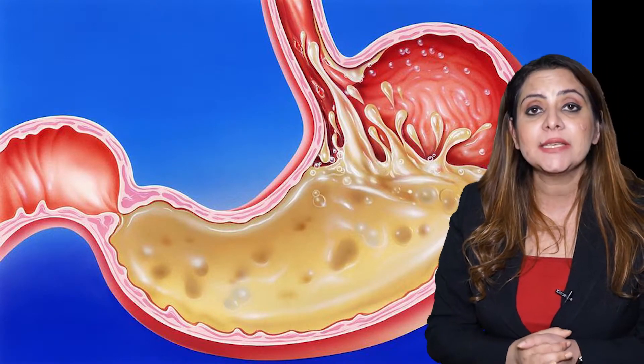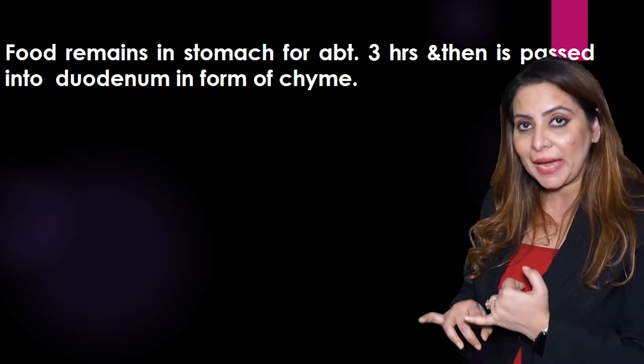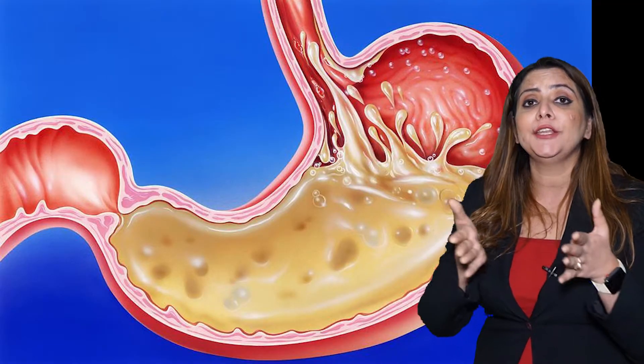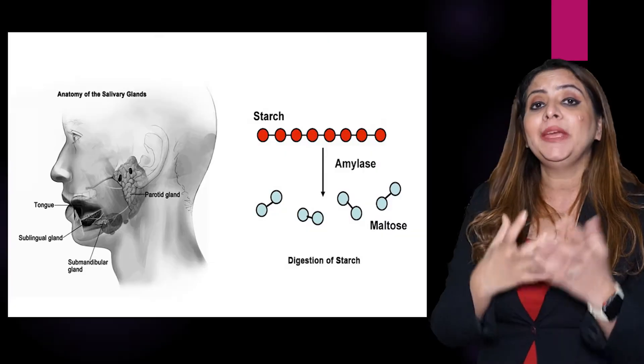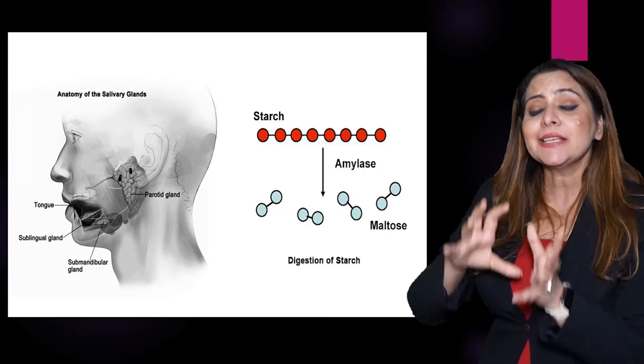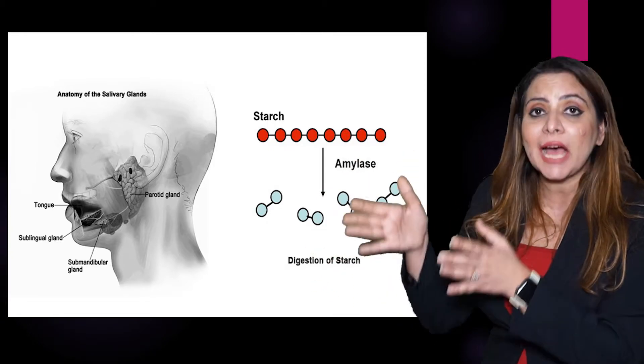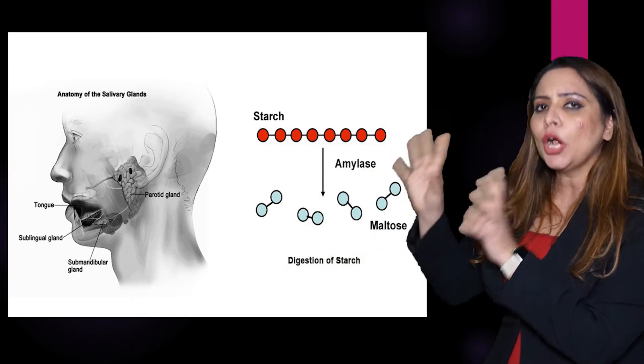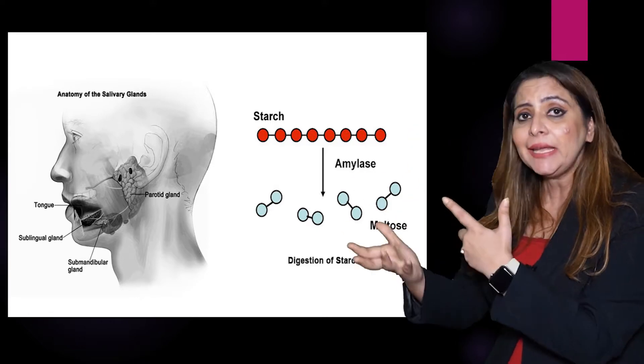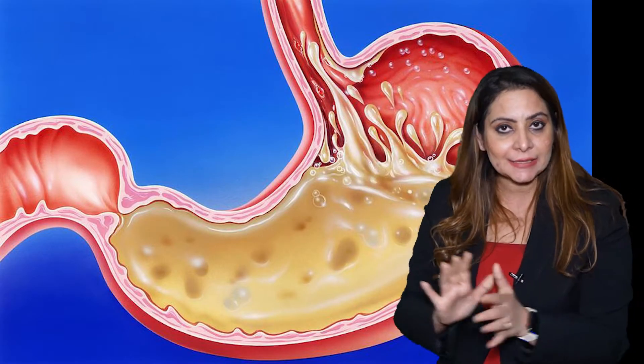The first gland is the salivary gland, present in the mouth. There are three types of salivary glands: the parotid, the sub-maxillary, and the sublingual. All salivary glands produce salivary amylase, also called ptyalin. Its function is to act on carbohydrates - for example, if you consume potato, it digests the starch and converts it into maltose, initiating carbohydrate digestion.